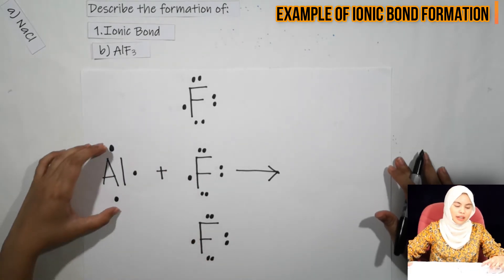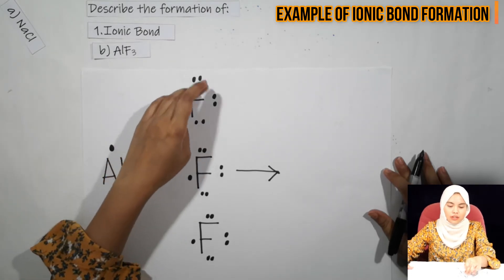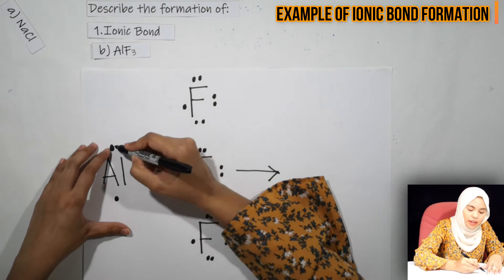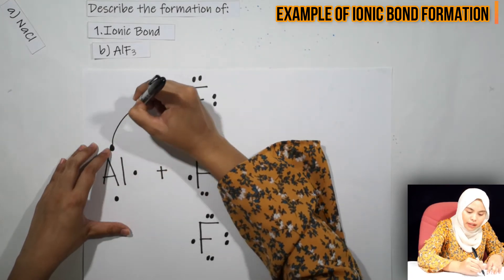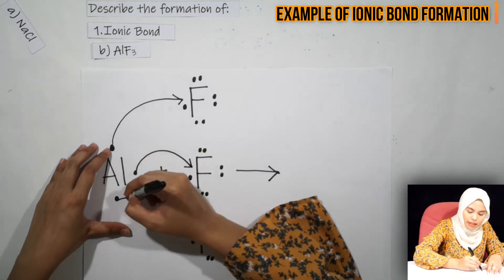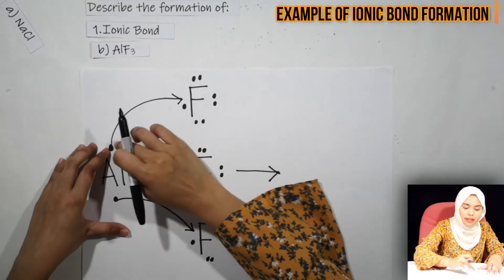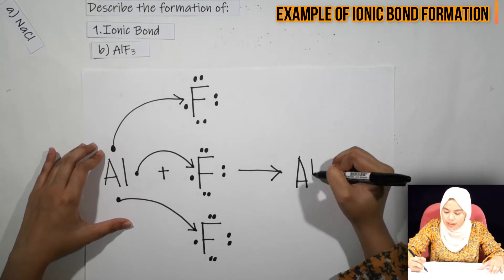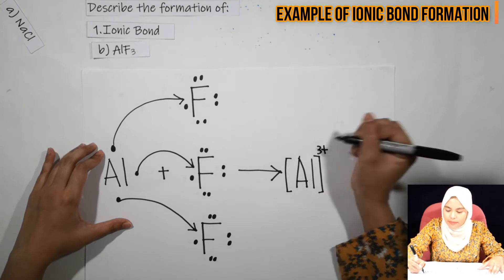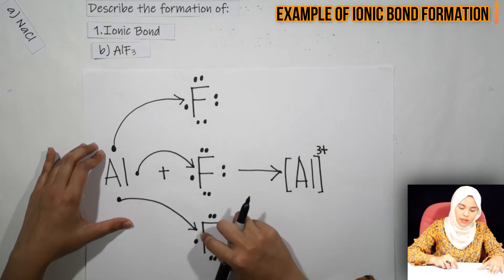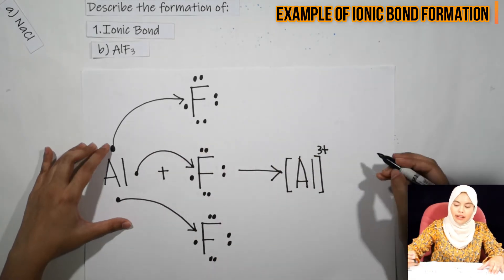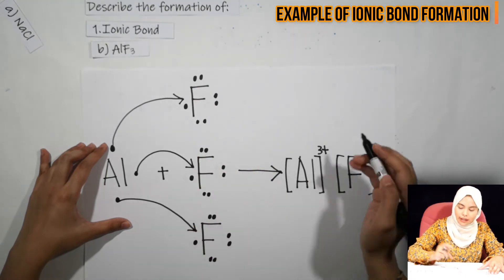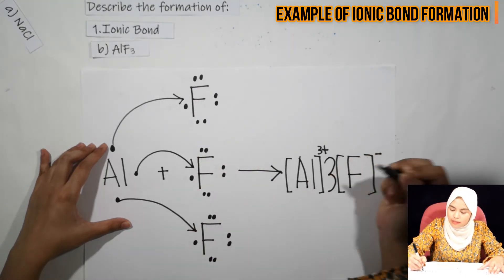In Al, kita tahu Al ada 3 valence electrons and F ada 7 valence electrons. Al pula metal, F non-metal. Basically apa yang berlaku kat sini ialah satu valence electron di Al ni akan di-donate pada each of these F. Kiranya setiap F element ni menerima setiap satu elektron daripada Al. Makanya kita akan dapat positive charge which is Al³⁺. Manakala F, because dia menerima satu valence electron each daripada Al, makanya dia akan jadi F⁻. Tetapi because kita ada 3 F di sini, maka kita letak sahaja 3 di depan F tersebut.